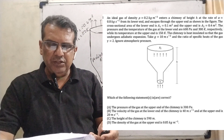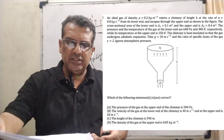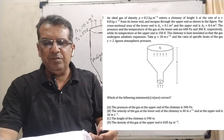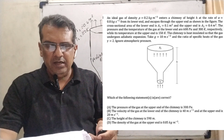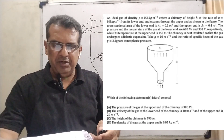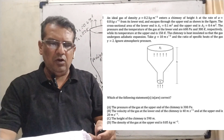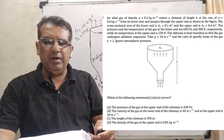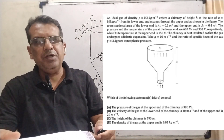Ignore atmospheric pressure. Which of the following statements are correct? Option A: the pressure of the gas at the upper end of the chimney is 300 Pascal. Option B: the velocity of the gas at the lower end is 40 m/s and at the upper end is 20 m/s. Option C: the height of the chimney is 590 meters. Option D: the density of the gas at the upper end is 0.05 kg per meter cube. This question is from JEE Advanced 2022.